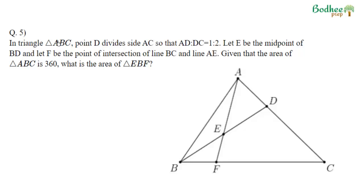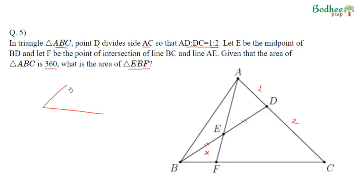Now the fifth question. In triangle ABC, point D divides AC in the ratio 1:2, E is the midpoint of BD, and AEF is extended to meet BC at F. The area of triangle ABC is 360. We need to find the area of triangle EBF. The key concept: if the vertex is common and the base is divided in ratio A:B, the areas are also in ratio A:B.